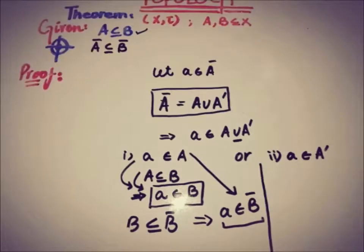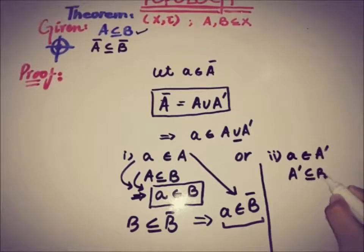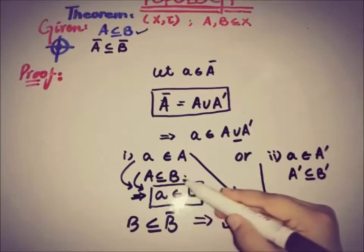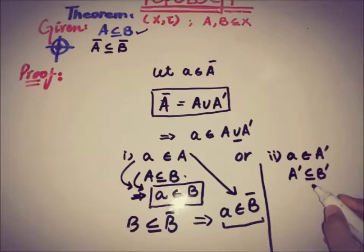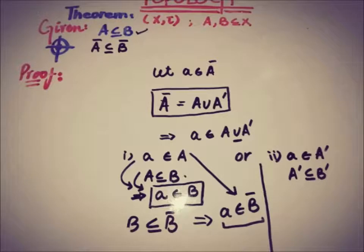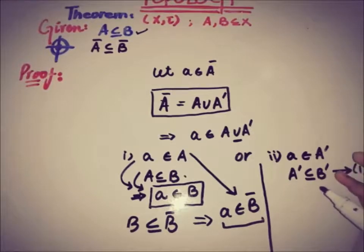In the second case, if a ∈ A' (the accumulation set of A), we use the property that A ⊆ B implies A' ⊆ B'. This was proved in the previous video on the theorem related to accumulation (limit) points.